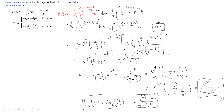So combining, it becomes exponential µt over (1 minus b squared t squared). And once we get the moment generating function, we replace t with it (where i is the imaginary unit), and it becomes exponential iµt over (1 plus b squared t squared), which is the characteristic function.